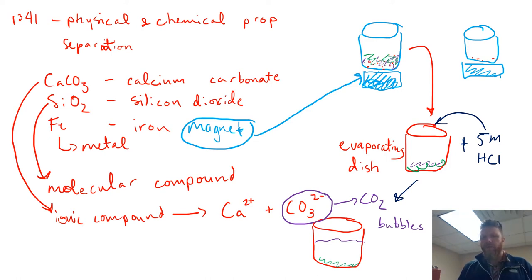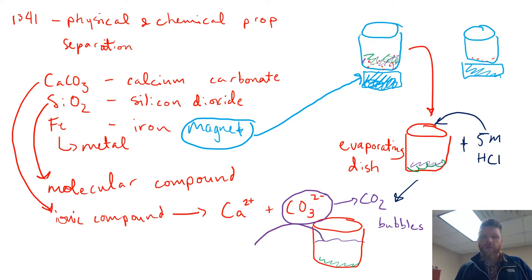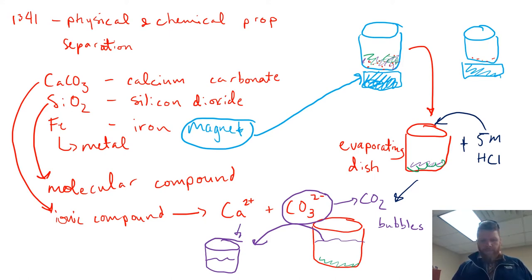The calcium ions are going to be floating around in that solution. The silicon dioxide is going to be at the bottom of your evaporating dish, meaning what you can do is transfer this liquid — which has your calcium ions — into another beaker. That beaker now just has a bunch of calcium ions present in it, with free calcium ions floating around in solution.